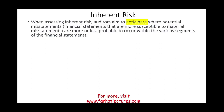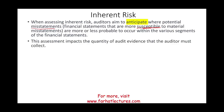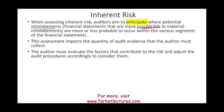When assessing inherent risk, the auditor is trying to predict and anticipate where potential misstatements are occurring — which accounts on the financial statements are more susceptible to material misstatement. Assessing an account as probably incorrect will affect the quantity of evidence we need to collect. If the account is susceptible to errors and fraud, we have to collect more evidence. The auditor must evaluate factors contributing to that risk — such as complexity, judgment, and estimates — and adjust audit procedures accordingly.